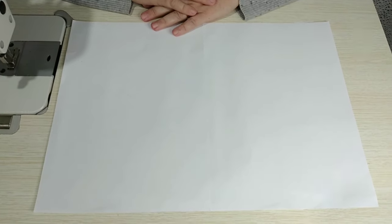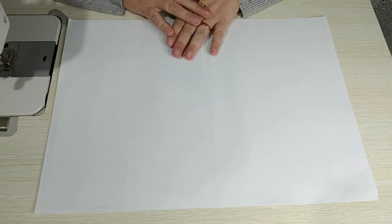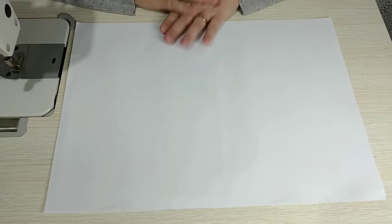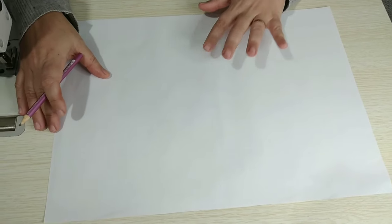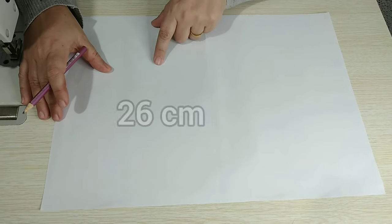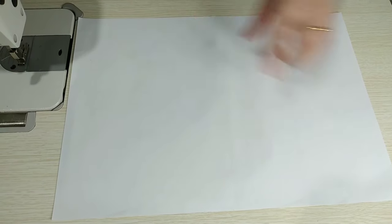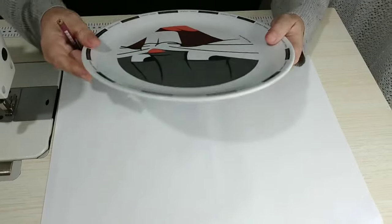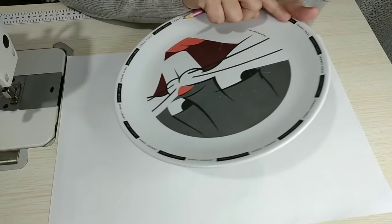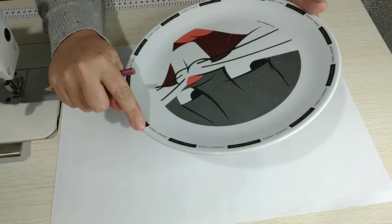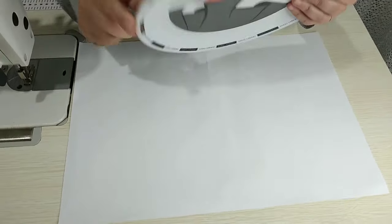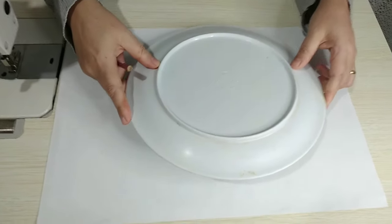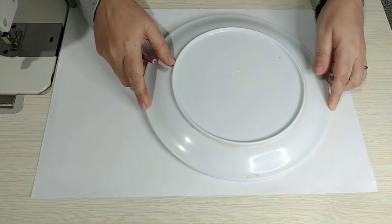Vamos lá, então, pessoal. Vou mostrar aqui para vocês como é que a gente vai construir o molde que é super simples dessa máscara. Eu juntei aqui duas folhas de papel A4 porque eu preciso fazer um círculo de 26 centímetros de diâmetro. E uma folha só não ia dar. E eu peguei um prato que eu tenho aqui em casa que tem exatamente 26 centímetros de diâmetro.